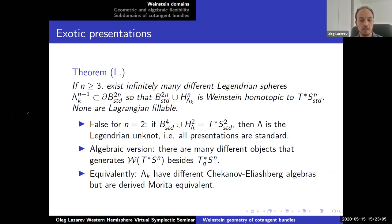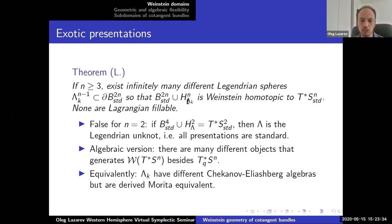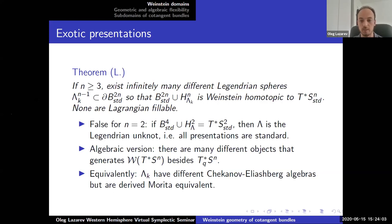Now let me state an algebraic version. The algebraic version is that there are actually many different objects in the Fukaya category of T*S^n that are generators besides the cotangent fiber. That's what this theorem implies, because the co-cores of these H_lambda^k's are going to be generators — this is a presentation with a single index n co-core, so by the generation theorem it is a generator. But the co-cores will not be cotangent fibers. Equivalently, these attaching spheres lambda_k have different Chekanov-Eliashberg algebras but the same derived category of modules over them.